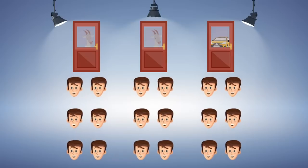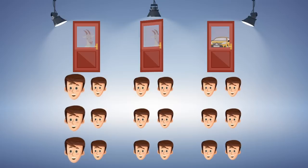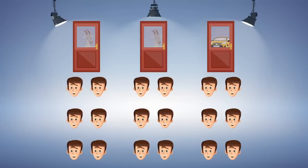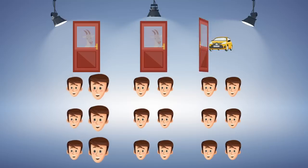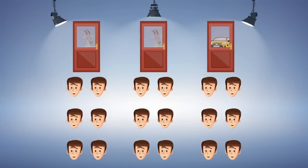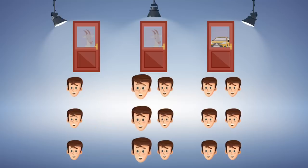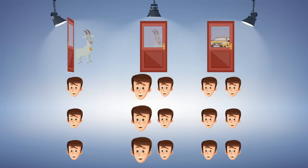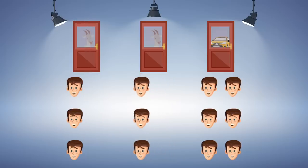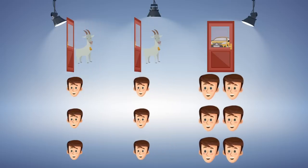So of the 6 people who chose door 1, 3 of them will witness their friend reveal a goat. The other 3 will see the car revealed, since there's a 50-50 chance of each one happening. We only care about the 3 who see the goat revealed though, since that was the original question. Then of the 6 who chose door 2, again 3 will see their friend reveal a goat. But of the 6 who chose door 3, all of them will see their friend reveal a goat, since the friend can only open door 1 or 2.